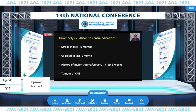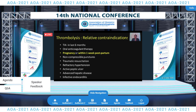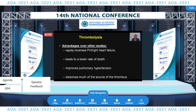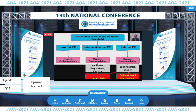Contraindications to thrombolysis include stroke in the last six months, GI bleed, history of major trauma, and tumors of the CNS. Relative contraindications include pregnancy or within one week of the postpartum period. The advantages of thrombolysis include reversal of pulmonary hypertension and right ventricular dysfunction, decreased mortality, improved pulmonary pressures, and dissolution of the thrombus source, limiting recurrent thromboembolic events.